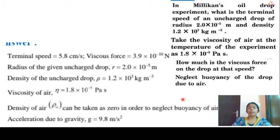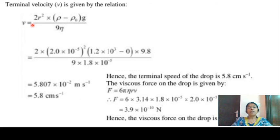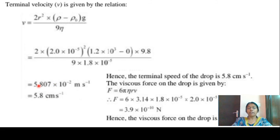The density of air sigma is considered zero, so the buoyancy term Fb equals 4/3·pi·r cubed·sigma·g is zero. Using the terminal velocity equation v equals 2/9 into r squared into rho into g divided by eta, substituting all values, the terminal velocity is 5.8 cm per second, which equals 5.8 into 10 raised to minus 2 meter per second.